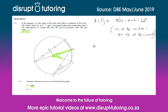Part B is to calculate angle L. We can see that one chord is equal to the other chord, so we can use the theorem that equal chords make equal angles. This means angle T equals angle L, so angle L equals 31 degrees. The reason is equal chords equal equal angles.